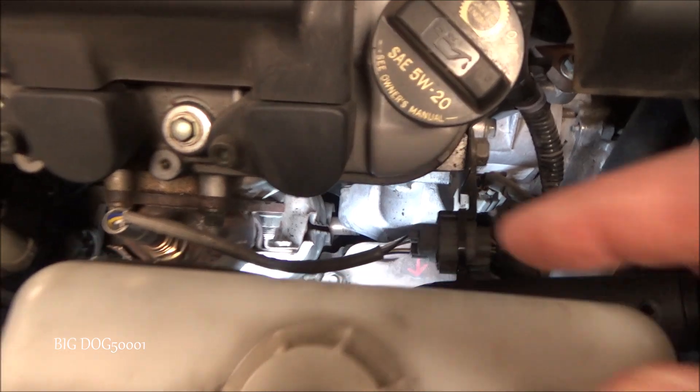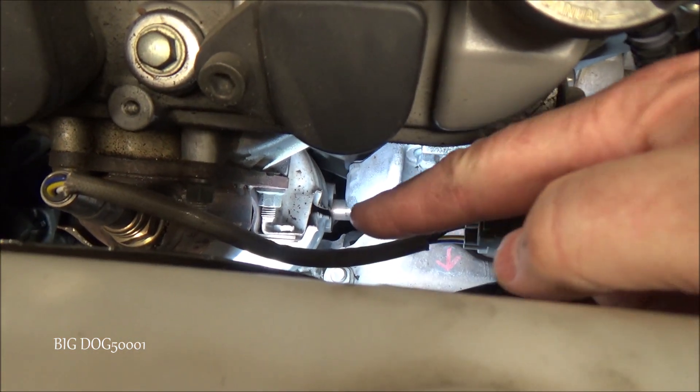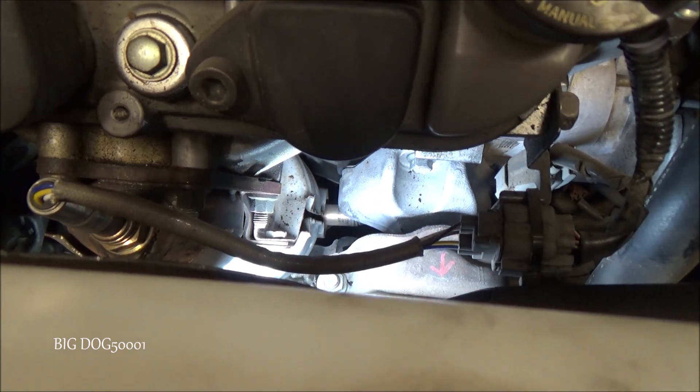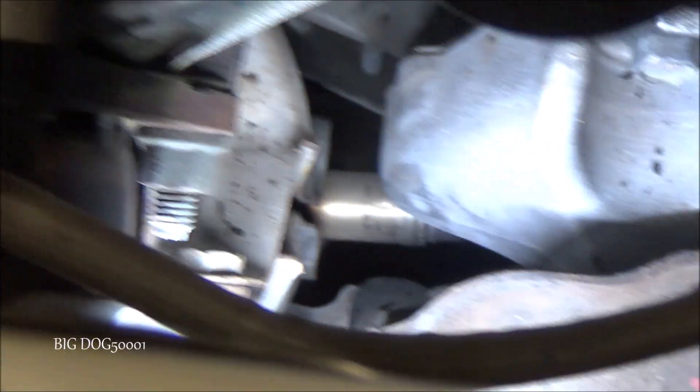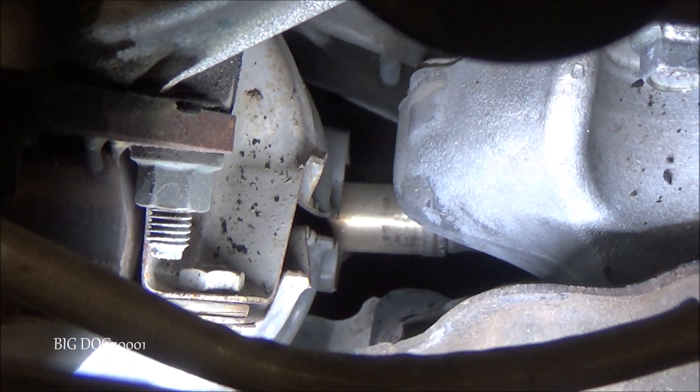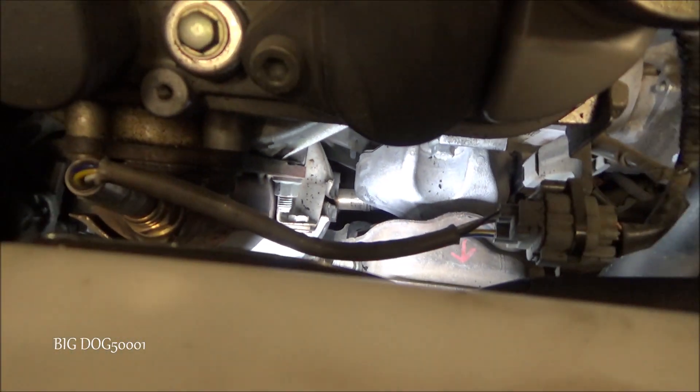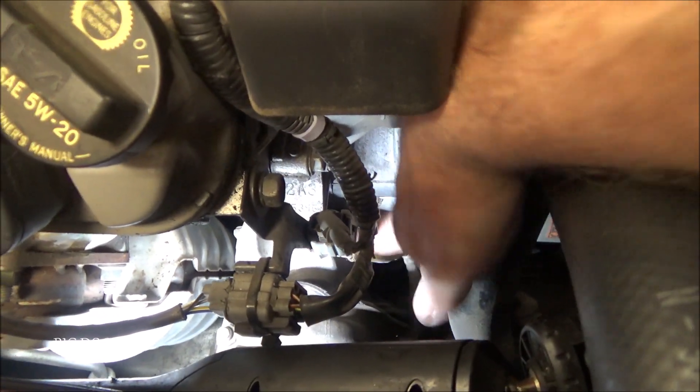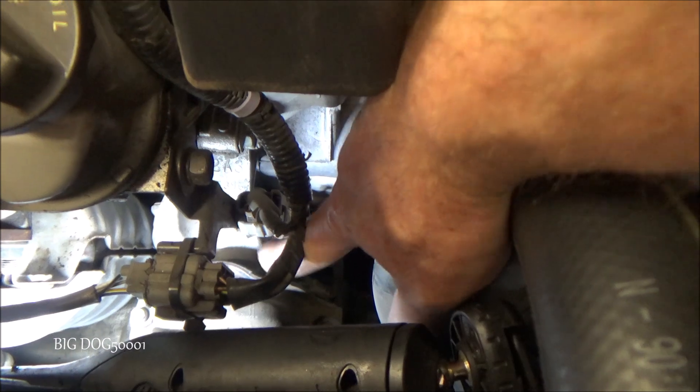I grabbed the light so we could see that bank two sensor two oxygen sensor a little better. Right at the tip of my finger right there is where it's going to be. See if I can get a close up. So that's it, that little gold thing right in the middle. And if we follow it around, this right here should be the wiring to it and that's the plug.